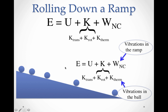The ball was also kind of bouncing and jostling on the ramp, so there was some heating of the ramp — the molecules in the ramp were being jostled. Not only that, there was a pretty big ball rolling down and it had to push air out of the way, so some of the air molecules got moved too. That would be lumped into the non-conservative work part as well.